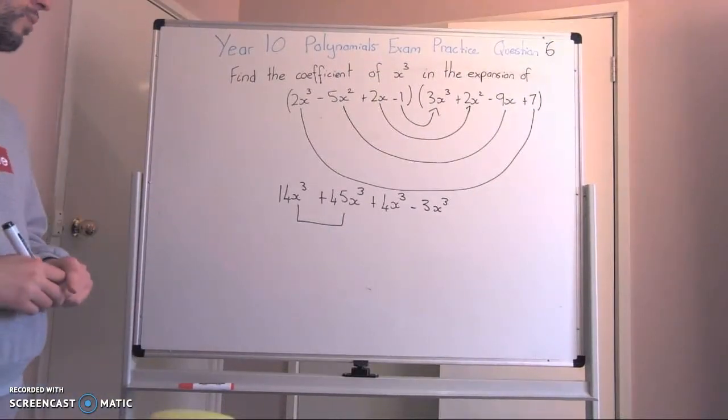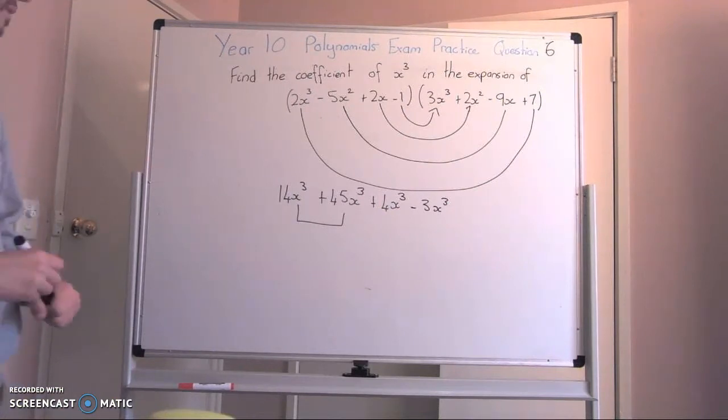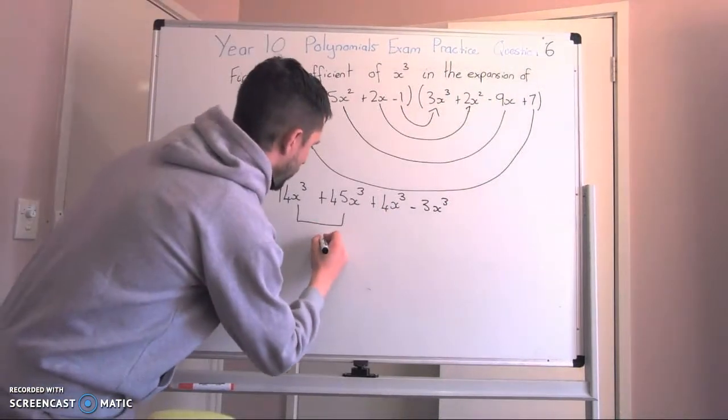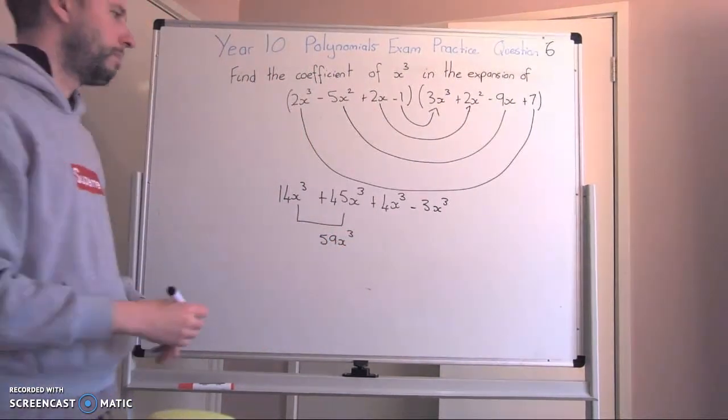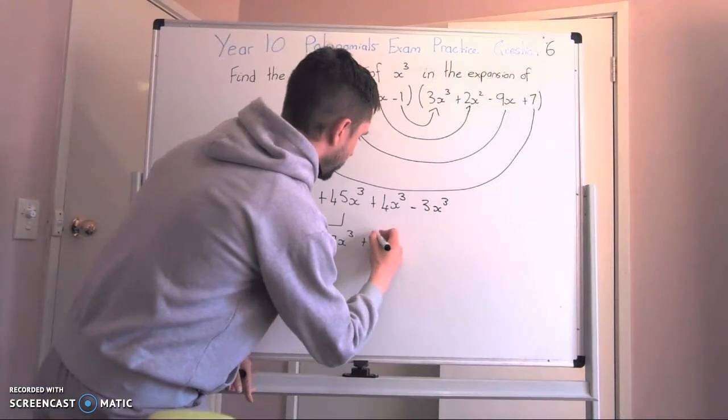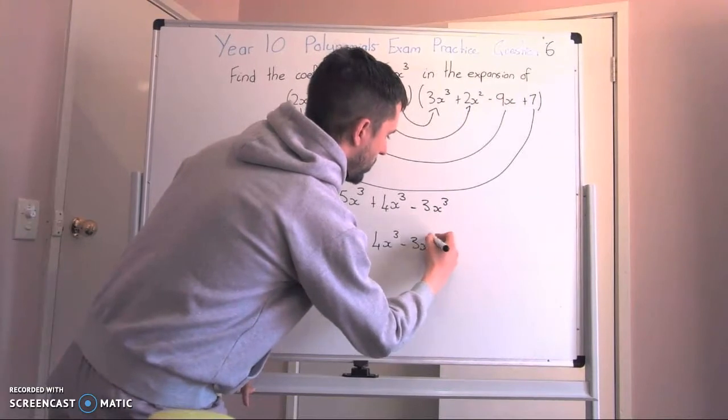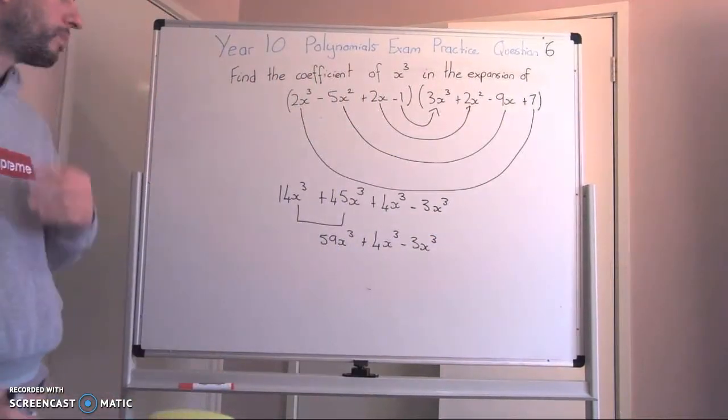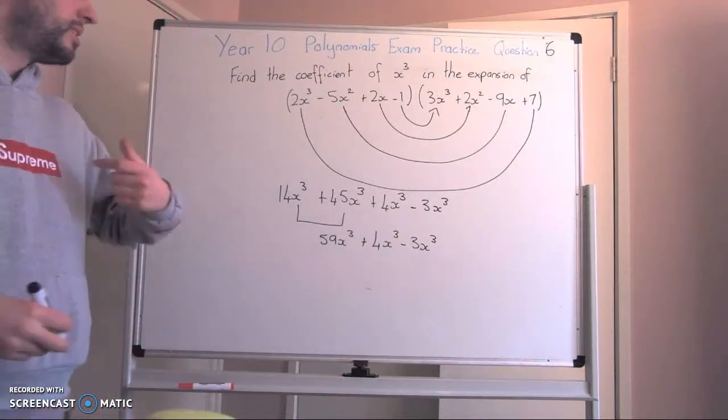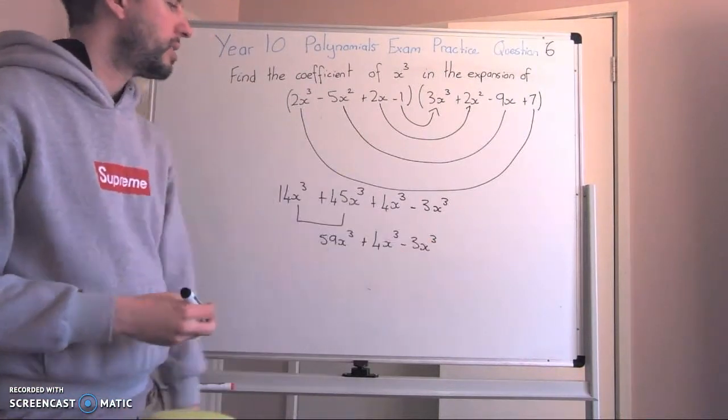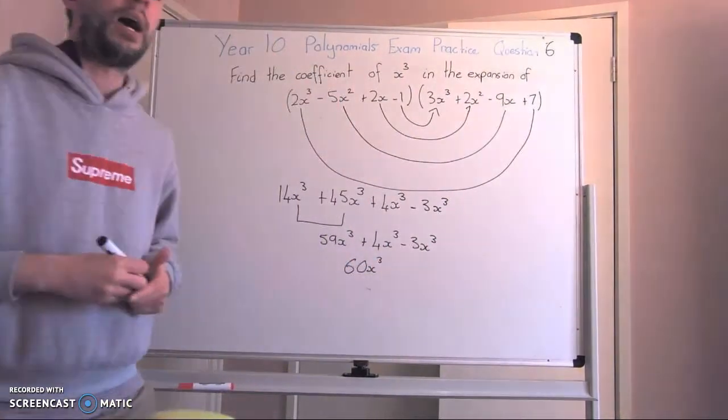14x³ plus 45x³ is 59x³. But then I still have plus 4x³ minus 3x³. So 59 groups plus 4 groups is 63 minus 3 is 60 groups of x³.